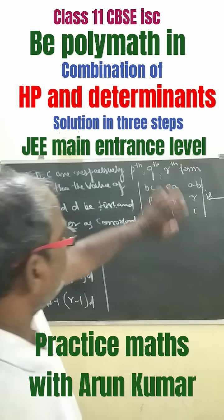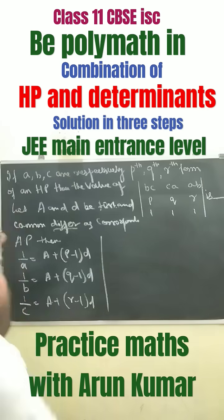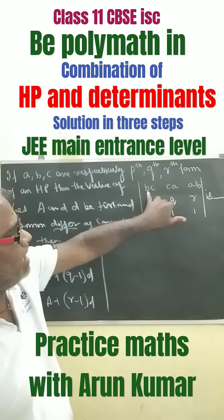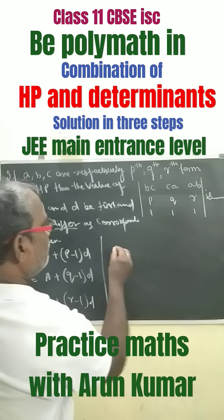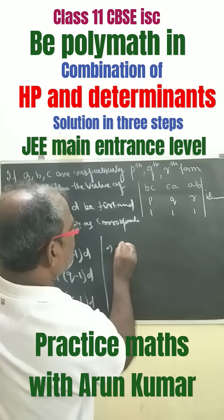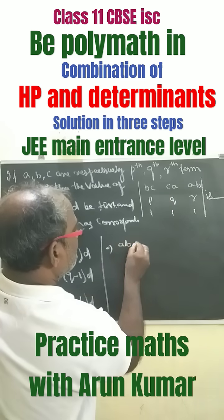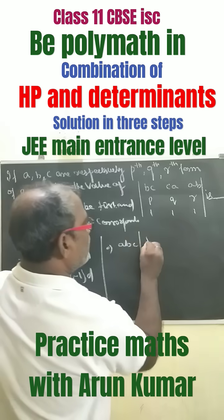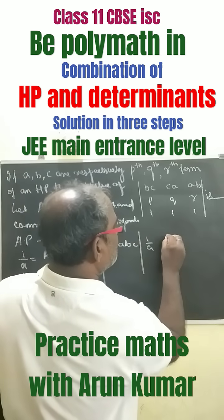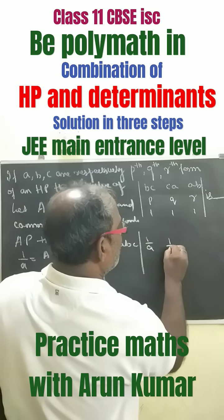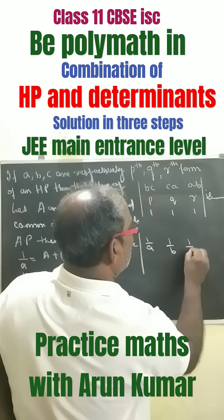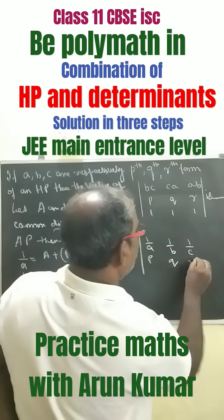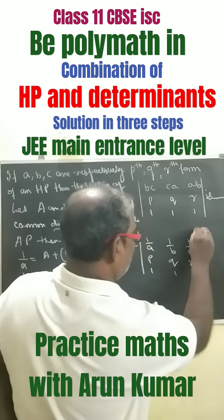Now, what we can see from here — taking A, B, C common from this — we get that it becomes 1/A, this becomes 1/B, this becomes 1/C, then P, Q, R and 1, 1, 1.